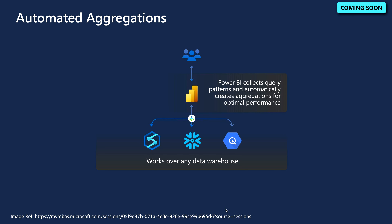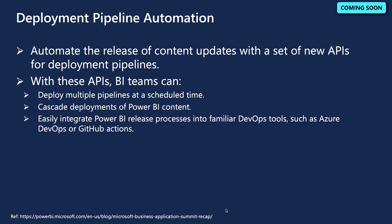Next is Automated Aggregations. Aggregations are very important for any data model. Automatic aggregation unlocks massive datasets for interactive analysis, as Power BI automatically creates and manages in-memory aggregations based on usage patterns to boost query performance and user concurrency. Automatic aggregations will support DirectQuery datasets over Azure Synapse, Azure SQL Database, Snowflake, and Google BigQuery, so you can use it from any data warehouse.